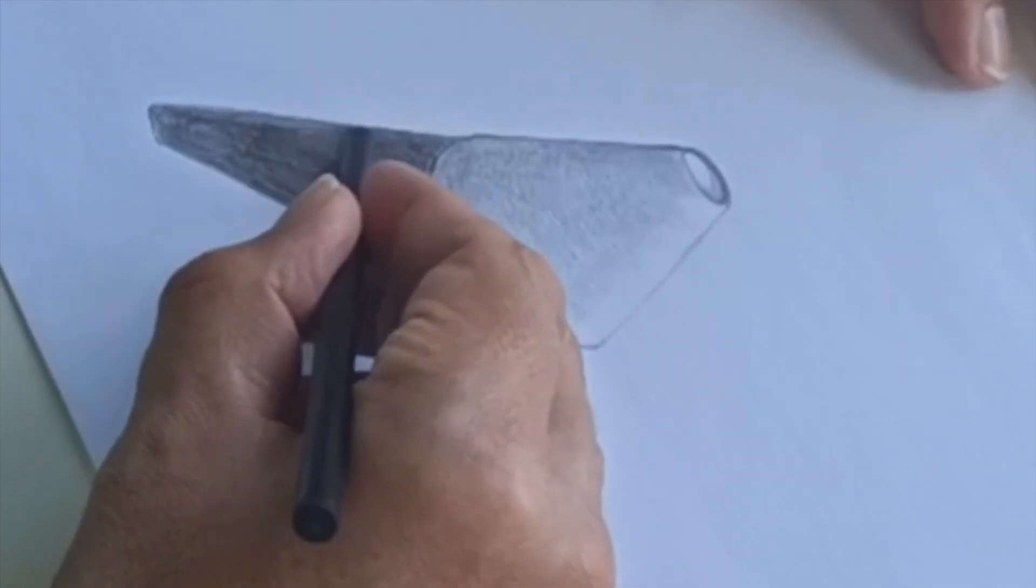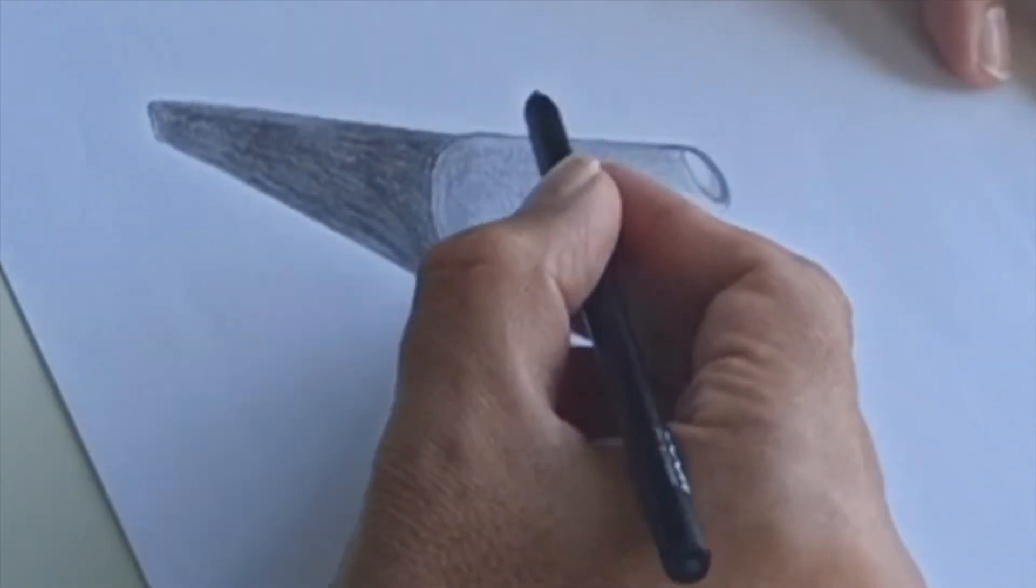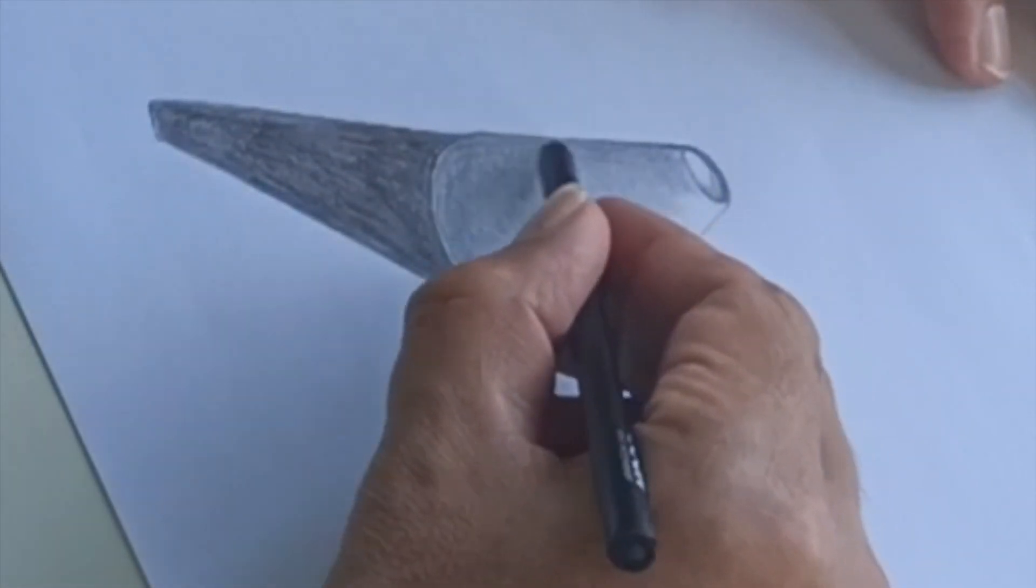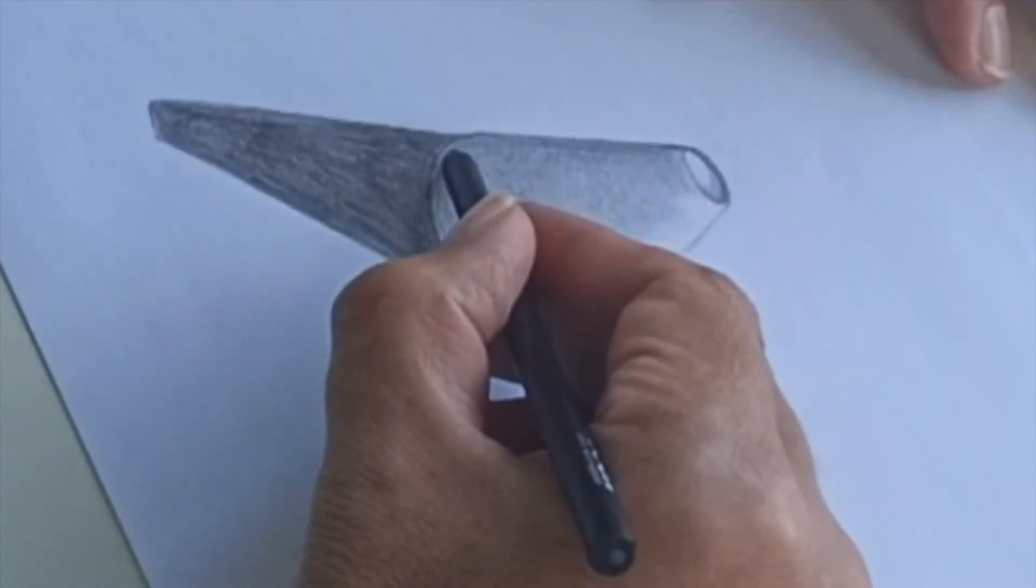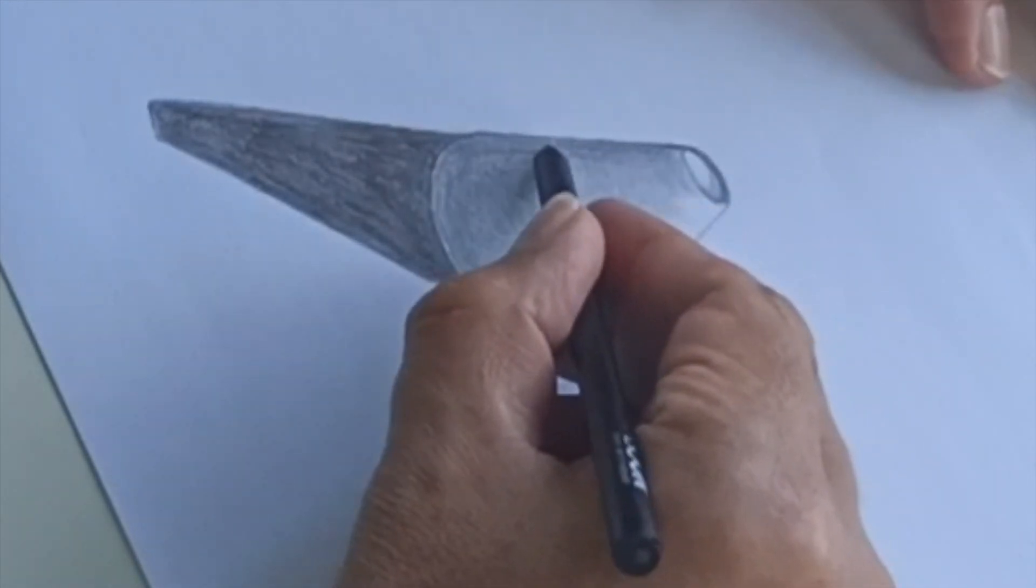Now I'm going to make this part here darker and some lines across here like this.